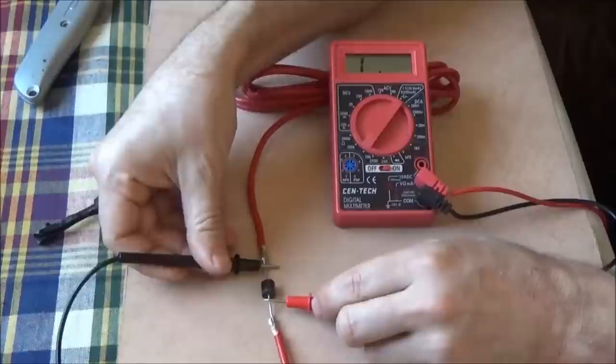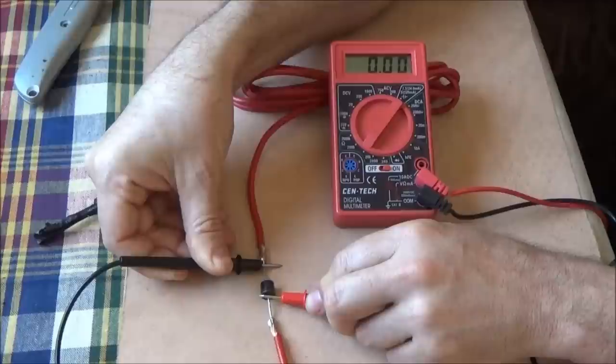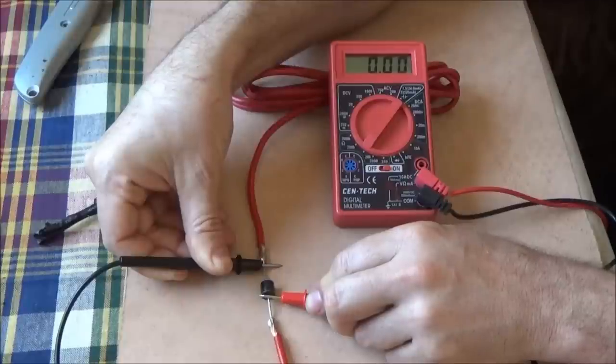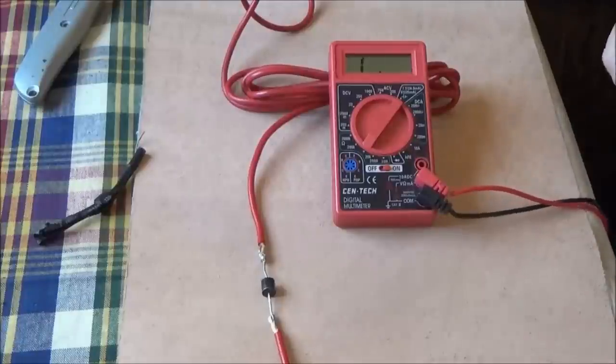Now if we try it in the other direction, what do we see here? Look at that, 0.01. So this diode shorted out. It was an absolute dead short, completely dead short, and acted like a piece of wire.